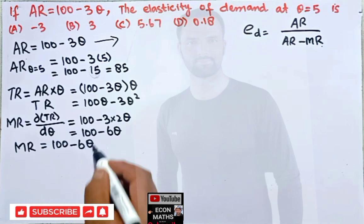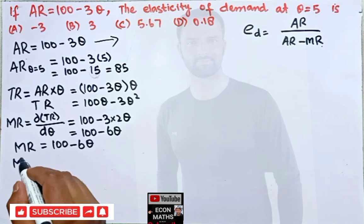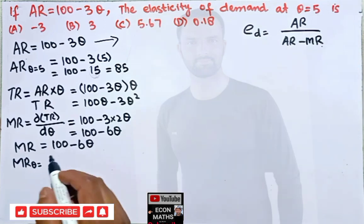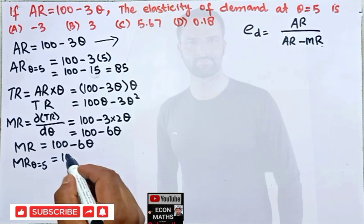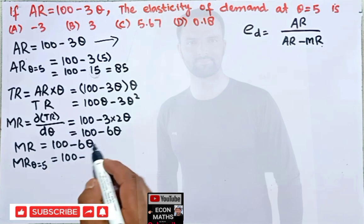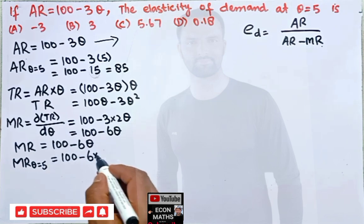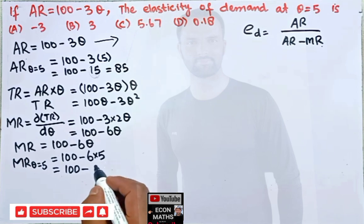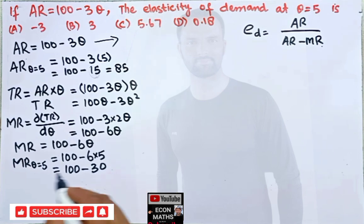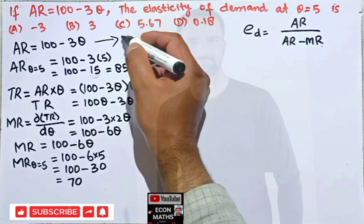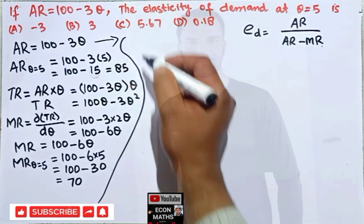Now we find marginal revenue when Q equals 5. We substitute Q = 5 into the marginal revenue function: 100 minus 6 times 5, which is 100 minus 30, giving us marginal revenue equal to 70.